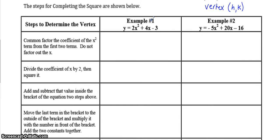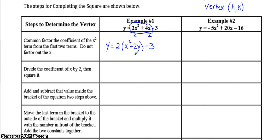We're going to take this equation and put it into vertex form using five steps. The first step is to common factor the coefficient of the quadratic term from the first two terms — do not factor out the x. So from the first two terms, you're going to factor out the 2, not the x. The 2 goes on the outside — that becomes your a value — and on the inside you have x squared plus 2x. That negative 3 stays on the outside.